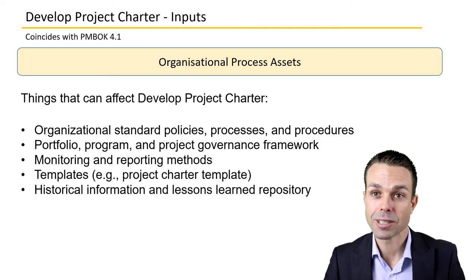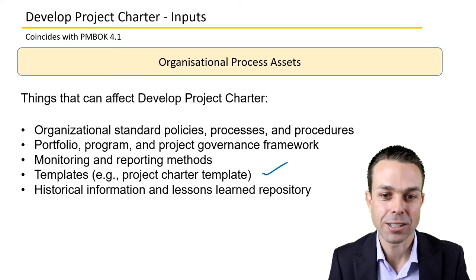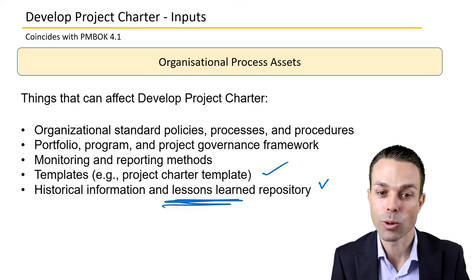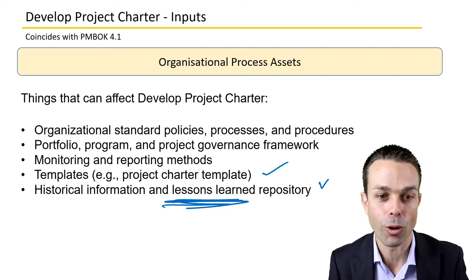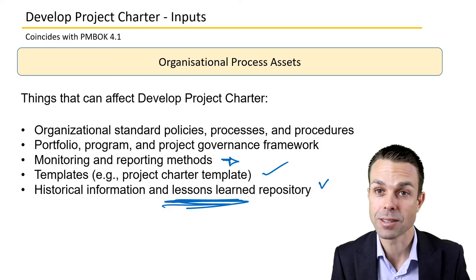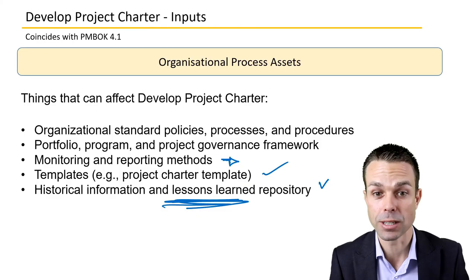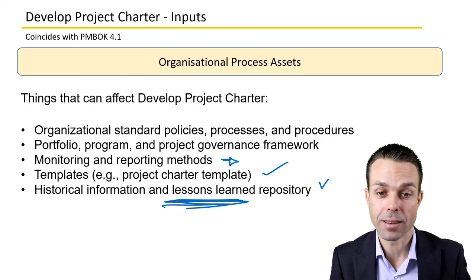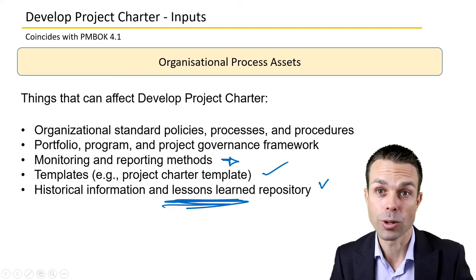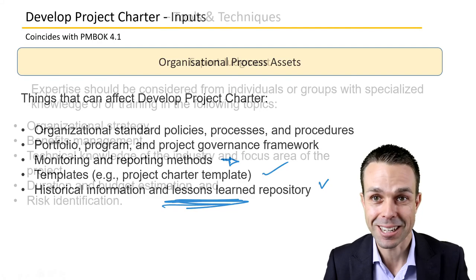Organizational process assets — also templates, historical information, and lessons learned within the organization. What has happened before? Particular reporting methods throughout the organization — these are the existing assets in the place where you're doing the project that you may have to conform to and use in order to create the project charter.